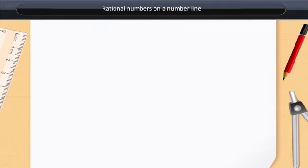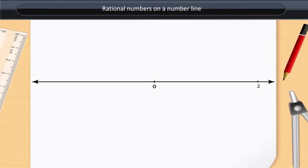Since we know that while marking integers on a number line, the successive integers are marked at equal intervals. Apart from this, 2 and minus 2 are at the same distance from 0.